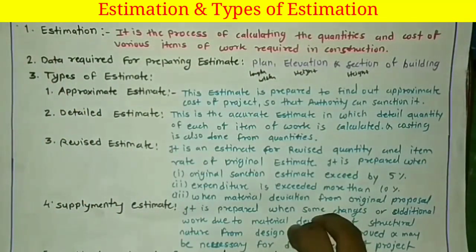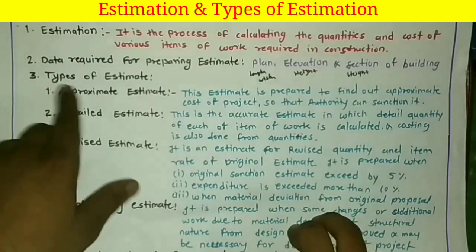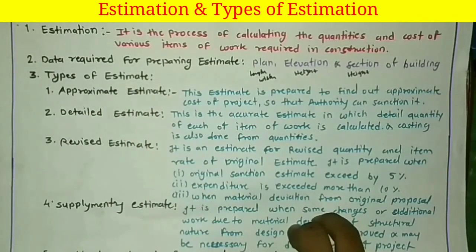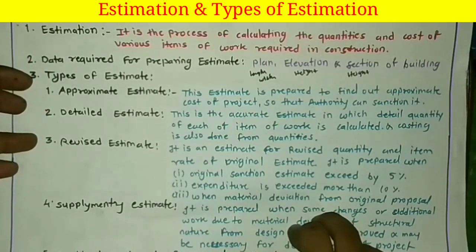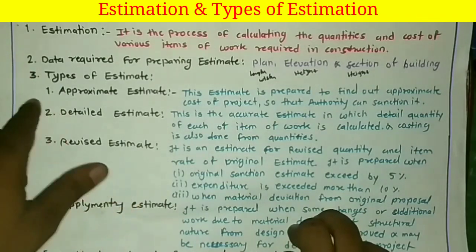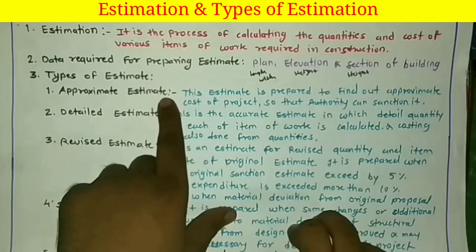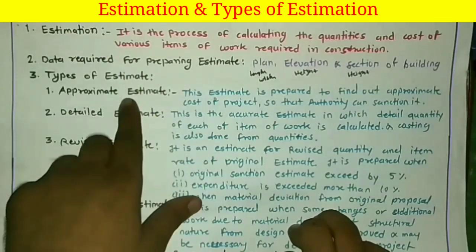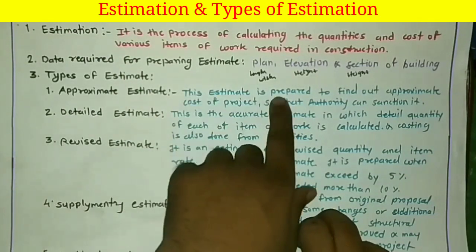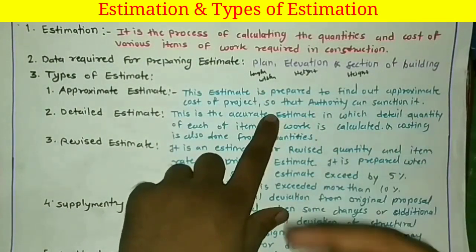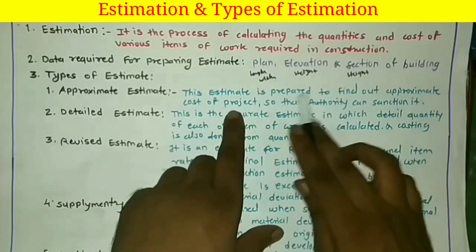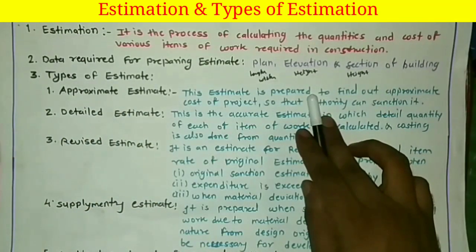There are various types of estimates, and we need to calculate all of them when required. The first type is the approximate estimate. As its name indicates, this estimate is prepared to find out the approximate cost of a project so that the authority can sanction it and check it. The approximate estimate is prepared just before the starting of the project, before preparing the detail estimate.